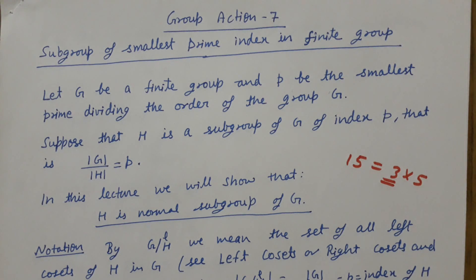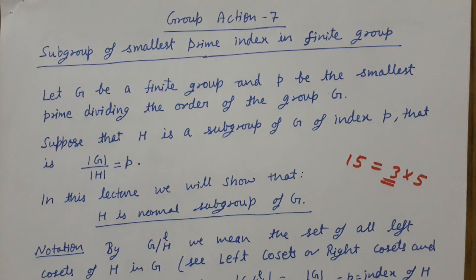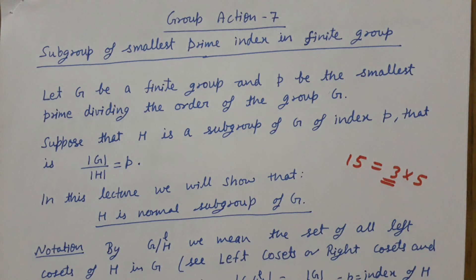Welcome to Group Action 7. In this lecture we will show that if G is a finite group, p is the smallest prime dividing the order of G, and G has a subgroup of index p, then that subgroup will be normal. For example, if we have a group of order 15, then 15 = 3×5, and 3 is the smallest prime dividing |G|. So if G has a subgroup of index 3, that subgroup will always be normal. We will now prove this.